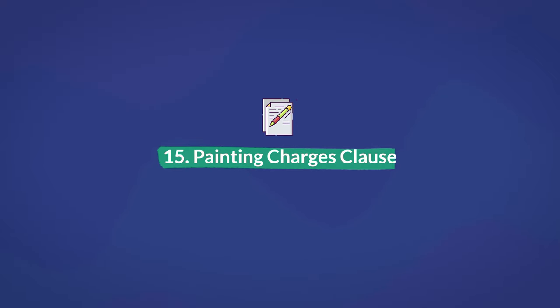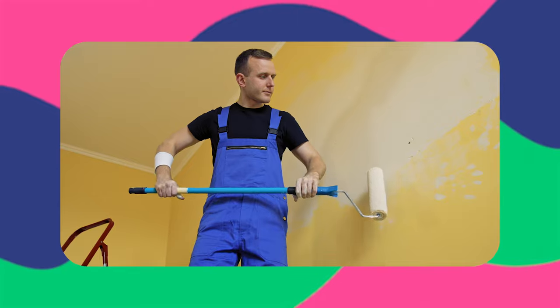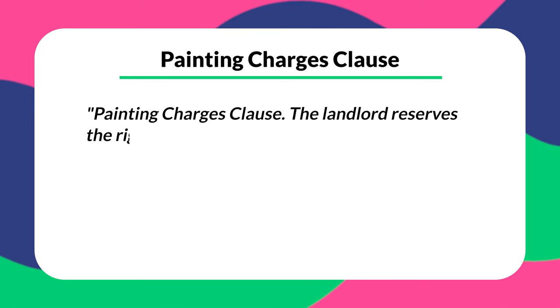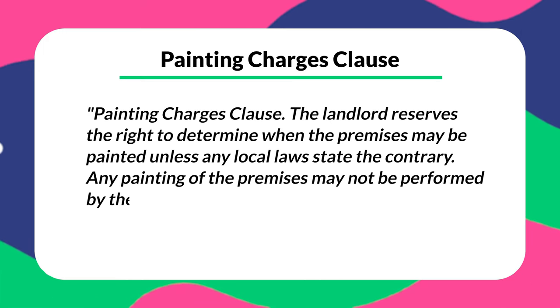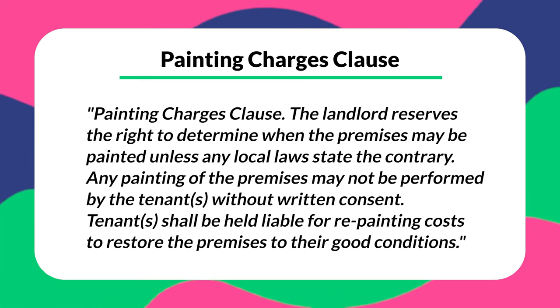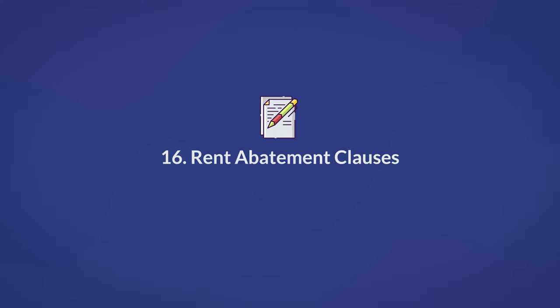Number fifteen is the painting charges clause. You should always have a painting charges clause in a rental agreement. Wear and tear are common in most premises, so you must specify a way to take care of those future damages. In most cases, a landlord may deduct a repainting cost from the security deposit. This clause could be written as: 'The landlord reserves the right to determine when the premises may be painted unless any local laws state the contrary. Any painting of the premises may not be performed by the tenants without written consent. Tenants shall be held liable for repainting costs to restore the premises to good condition.'